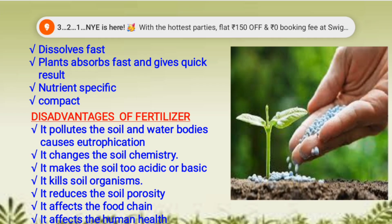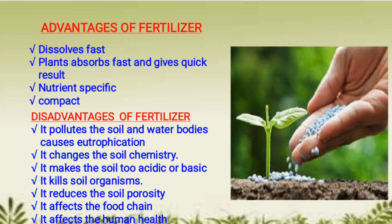Some examples of fertilizers are urea and NPK. Now there are some disadvantages of using fertilizers: first, it pollutes the soil and water bodies, causing eutrophication — that is, the oxygen level of water decreases resulting in the death of aquatic organisms. Next, it changes the soil chemistry, making the soil either acidic or basic. It also kills soil organisms and reduces soil porosity.